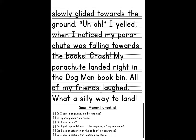When you are done, the back page has a small moment checklist. After you're done with your story, look over the checklist and put a check inside the boxes. Do I have a beginning, middle, and end? If you do, put a check inside. Is my story about one topic? If it is, check that off. Did I use details? Did I put capital letters at the beginning of my sentences? Did I use punctuation at the ends of my sentences? Do I have a picture that matches my story? Now, since I do not have a picture yet, that is what I'm going to do next.